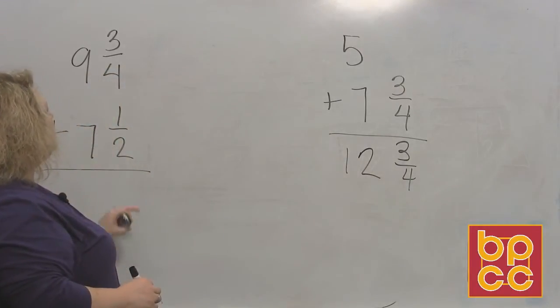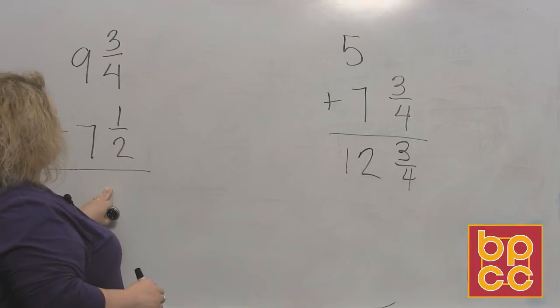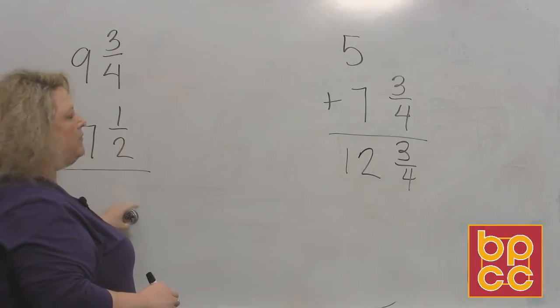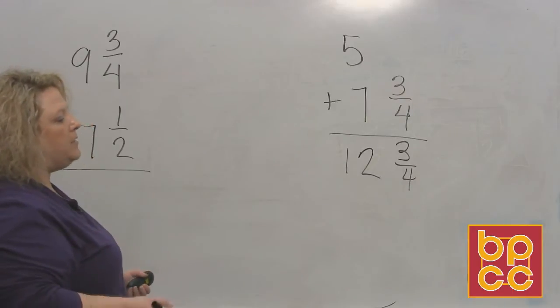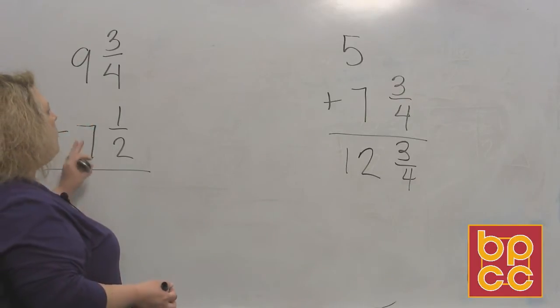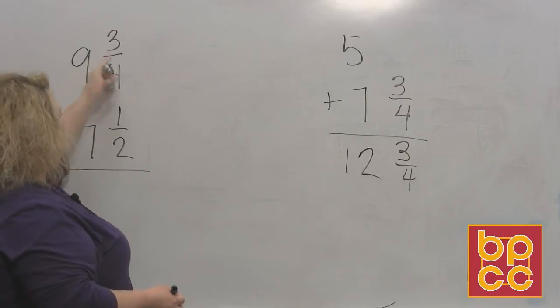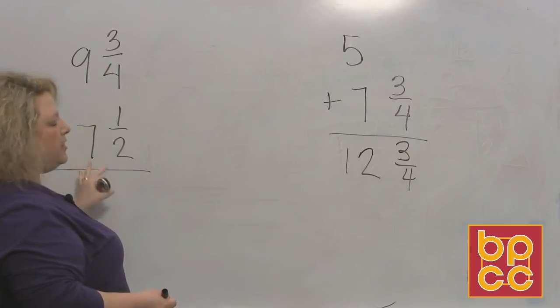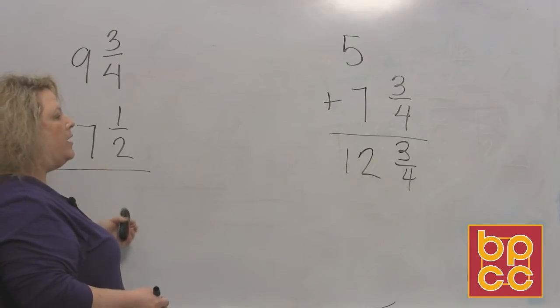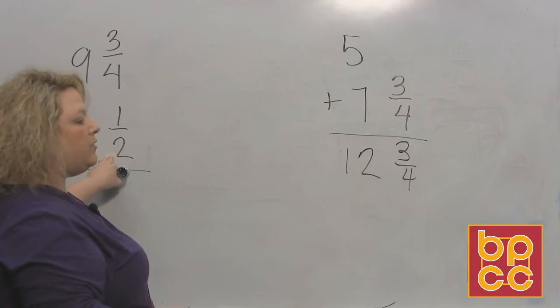On this case, 9 and three-fourths plus 7 and one-half. Now on this one you're going to have to find common denominators. So what we want to do is, instead of just doing the fractions and just doing the whole numbers, we're going to do a much easier way. We're going to change each one of our mixed numbers into improper fractions before we get started.